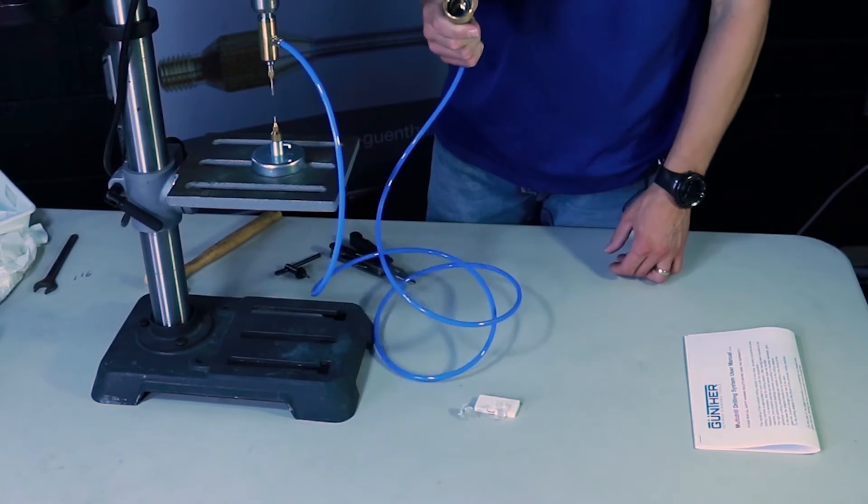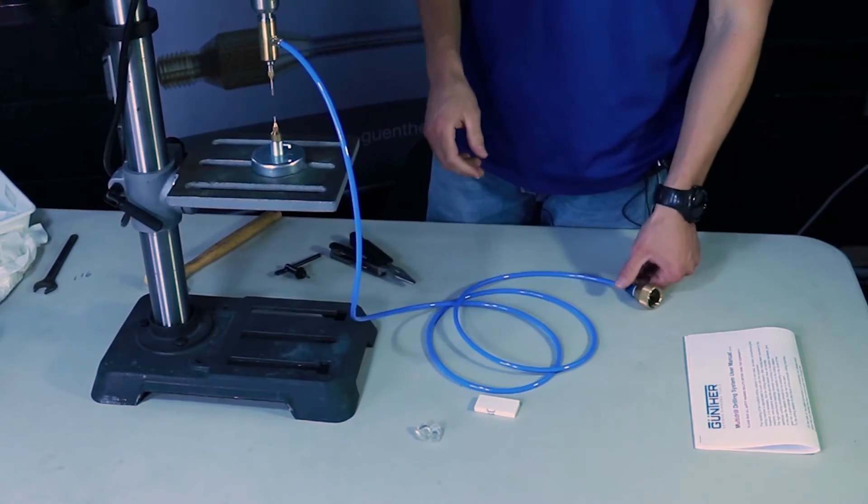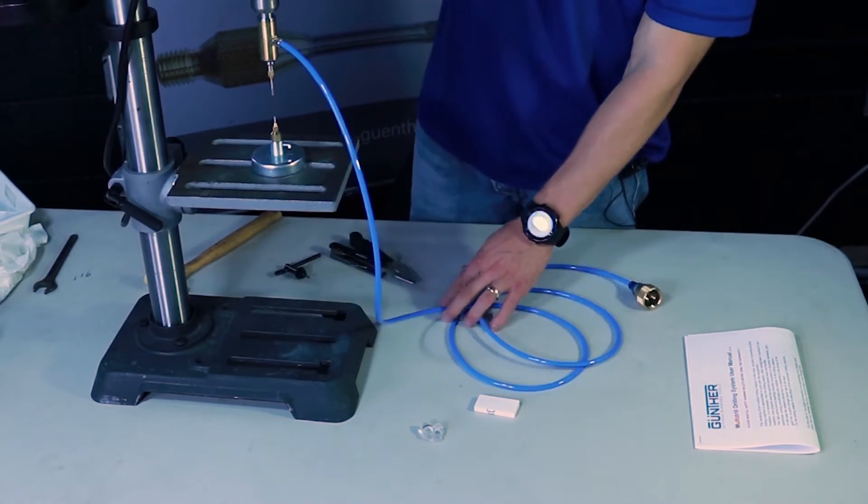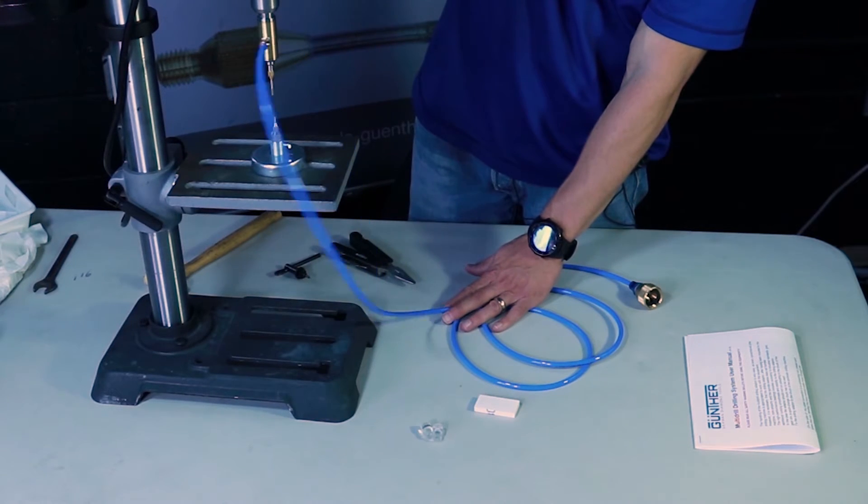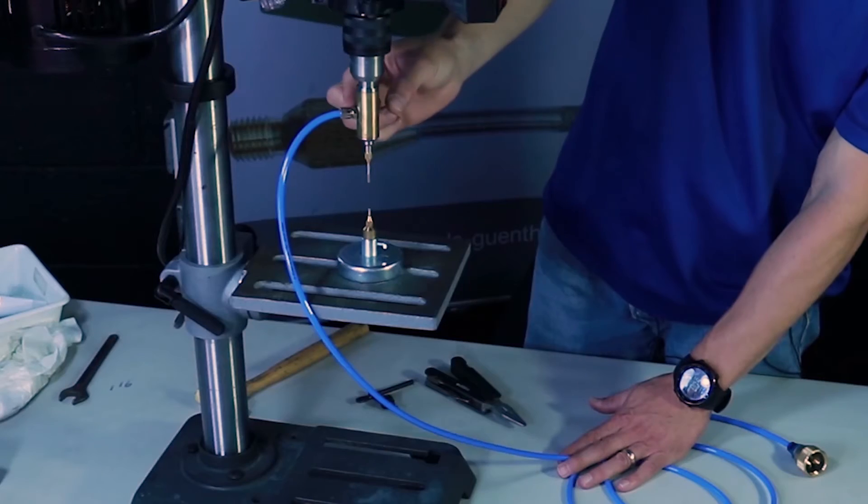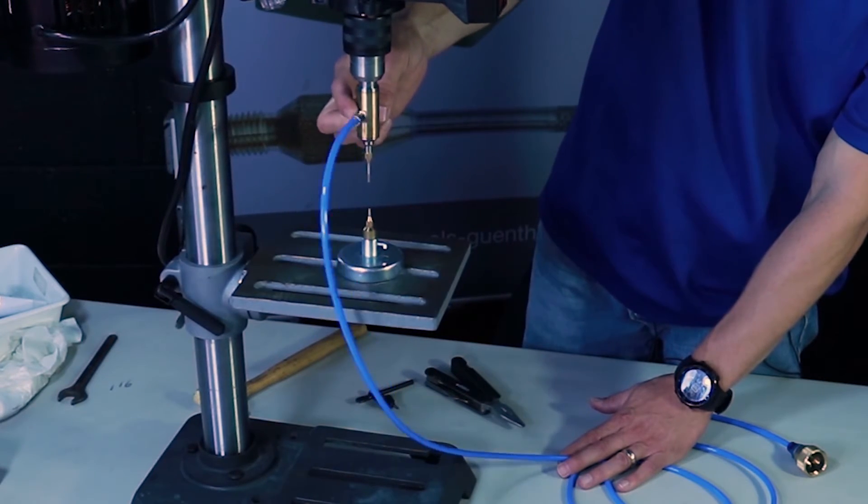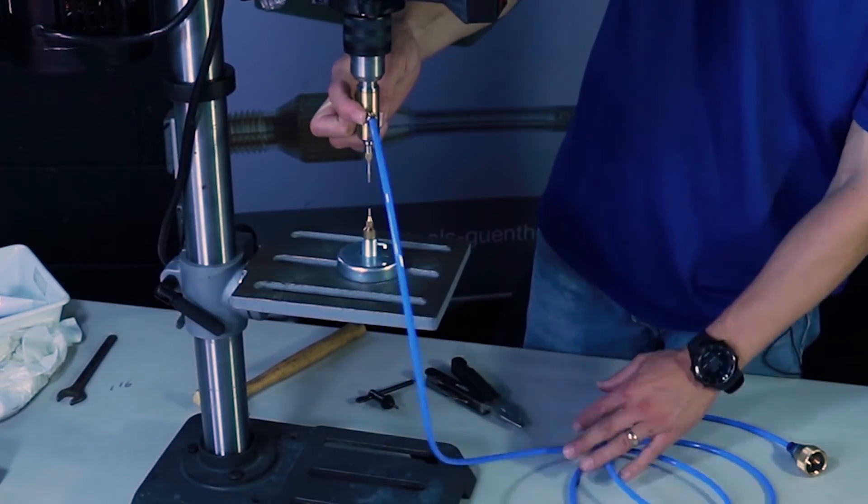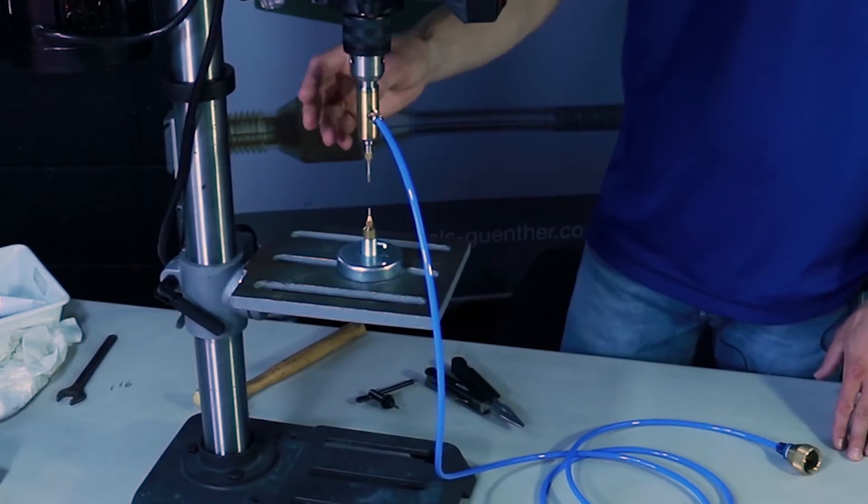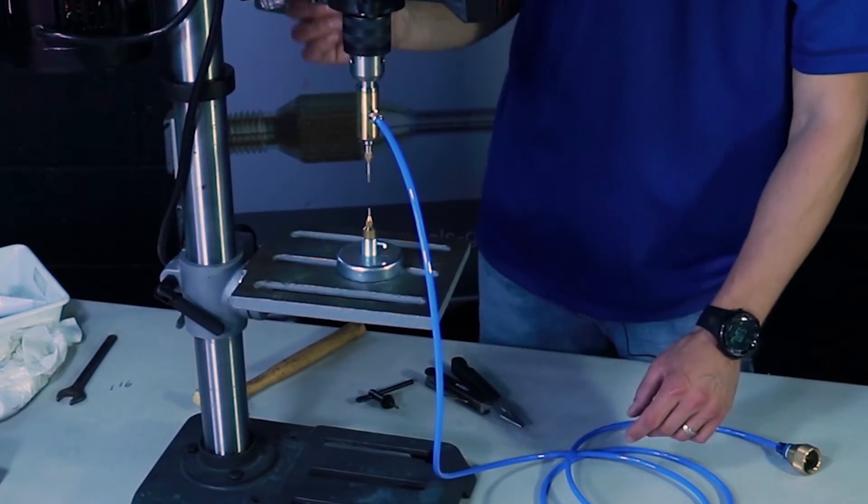And then you just connect this to a hose or a water spigot. And you see this is on a bearing, so it's not going to spin around. And it's even more stable when the line is filled with water.